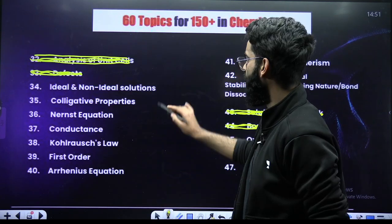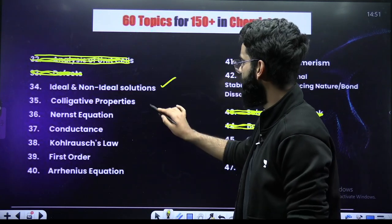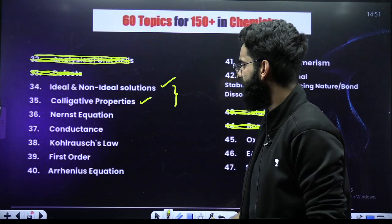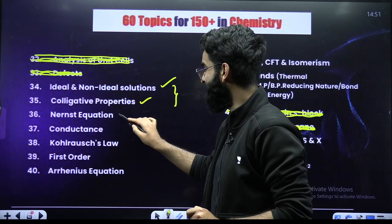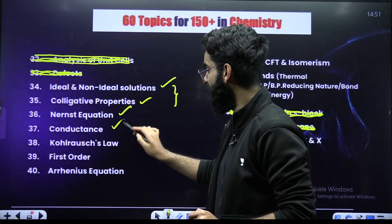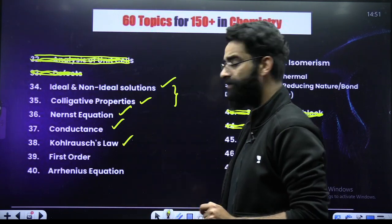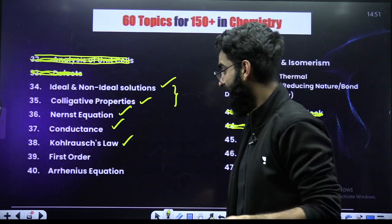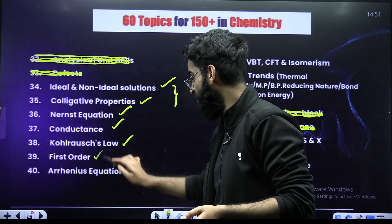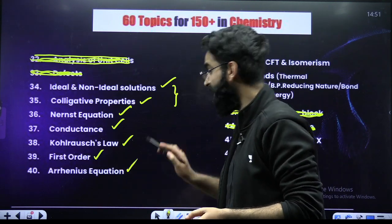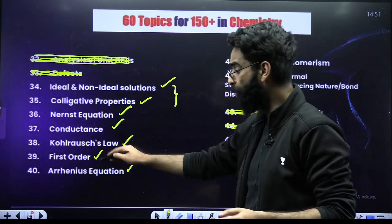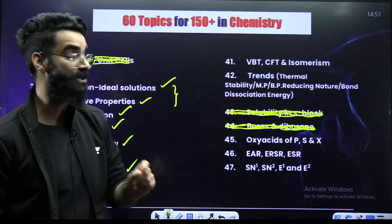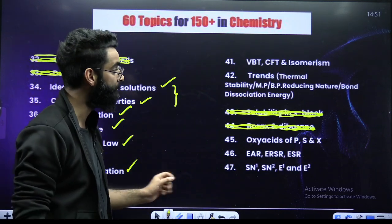From the chapter Solution, you have got ideal and non-ideal solutions and colligative properties. From the chapter Electrochemistry, it's the Nernst equation, conductance, Kohlrausch's law. From the chapter Chemical Kinetics, it's first order reaction and the Arrhenius equation — do them on priority basis. Short questions are going to be asked.